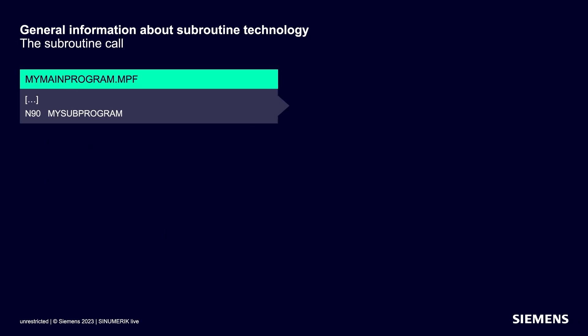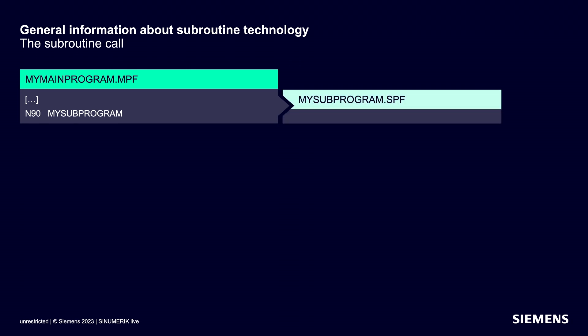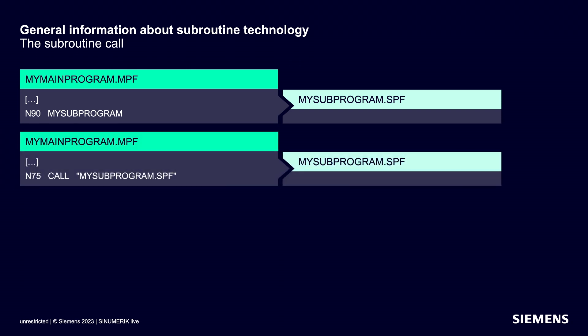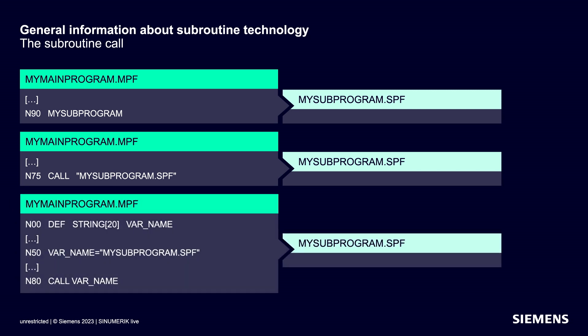There are several ways of creating a sub-program call. You can simply write the name of the sub-program into a CNC block in the main program and the CNC interpreter will call our sub-program. Or you can use the CNC language command CALL with the name of the sub-program in quote marks — this is also how sub-programs are called in adjacent workpiece folders. If we want to call sub-programs indirectly in flexible CNC programs, we simply define a string variable, assign the text to it, and use the CALL command with the variable.